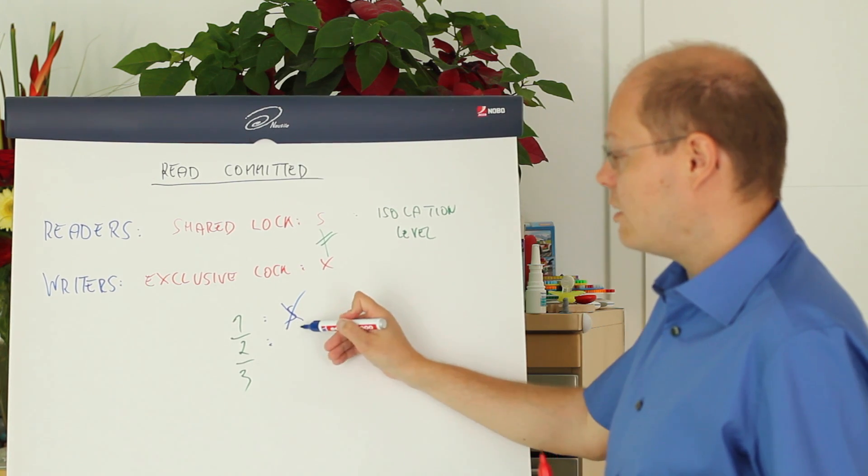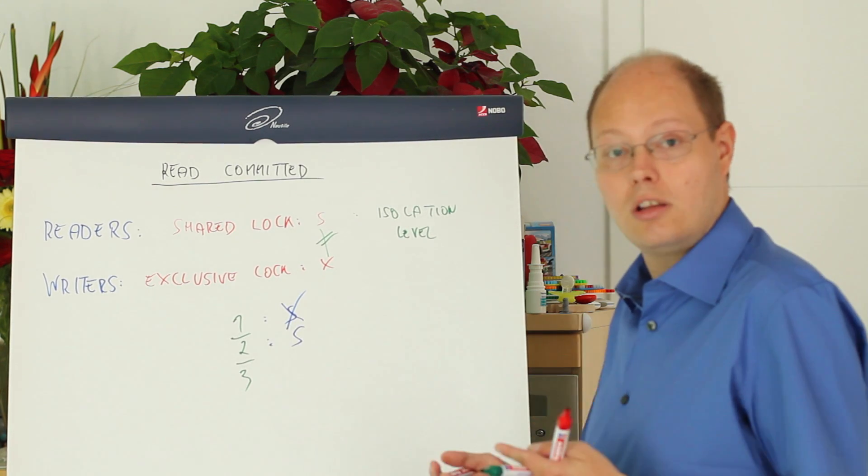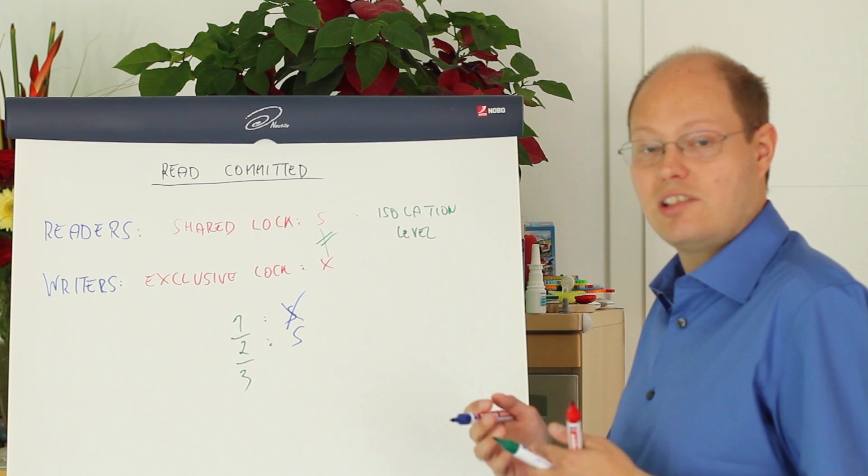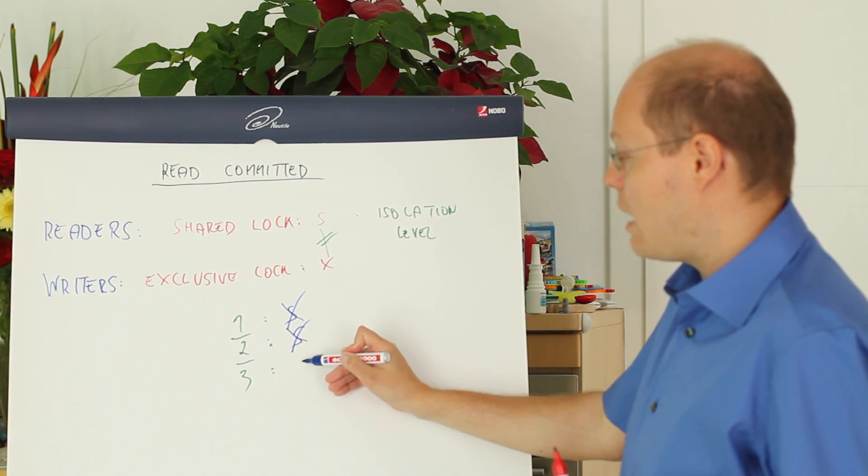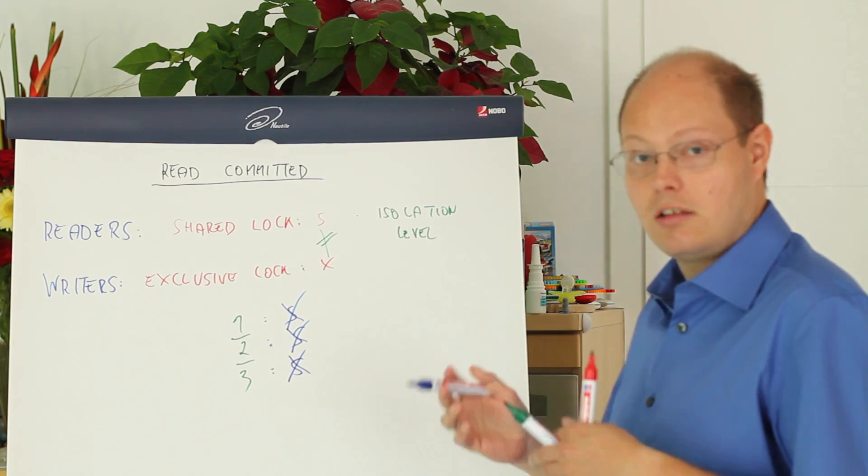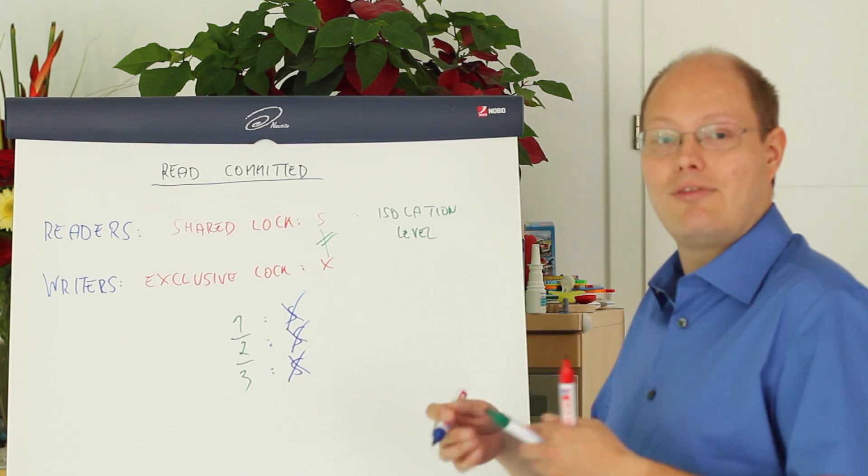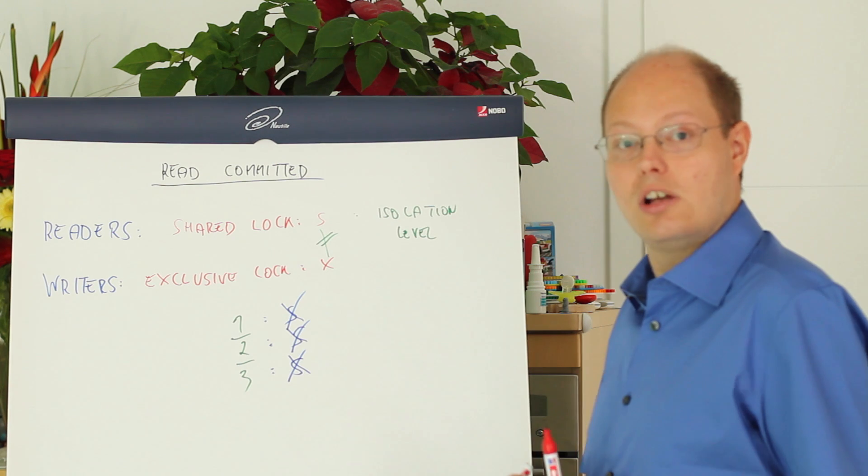Then we move on to the second record we acquire a shared lock. When we have processed that record we release the shared lock. And the same thing happens with the third record where we also acquire and finally release the shared lock.